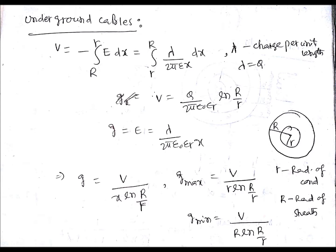At the radius of sheath, the stress is minimum because the denominator is maximum, since capital R is greater than small r. The minimum stress or electric field intensity is V/(R ln(R/r)). At the sheath, field stress is minimum, whereas at the conductor it is maximum.